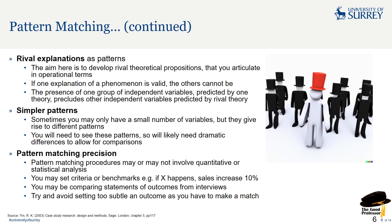You might have rival explanations of patterns. The aim is to develop rival theoretical propositions articulated in operational terms. If one explanation of a phenomenon is valid, the others cannot be — you've got a whole bunch of ways of explaining, and then you rule out the others. The presence of one group of independent variables predicted by one theory precludes others predicted by a rival theory.